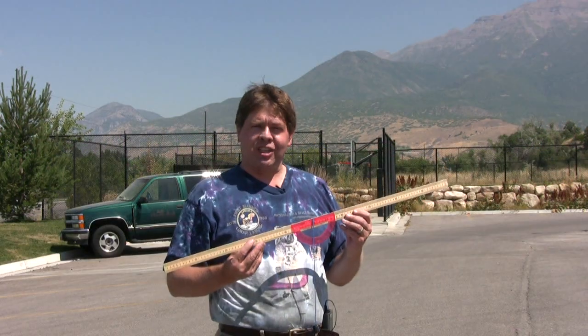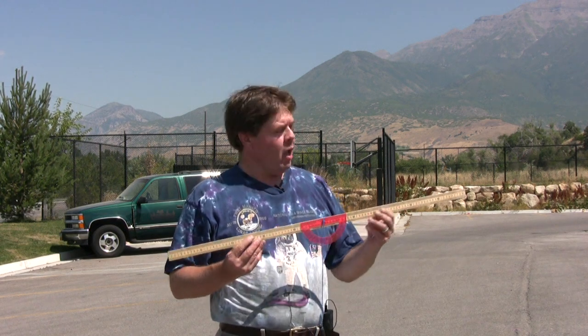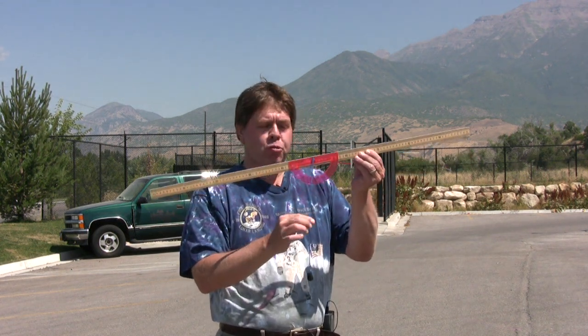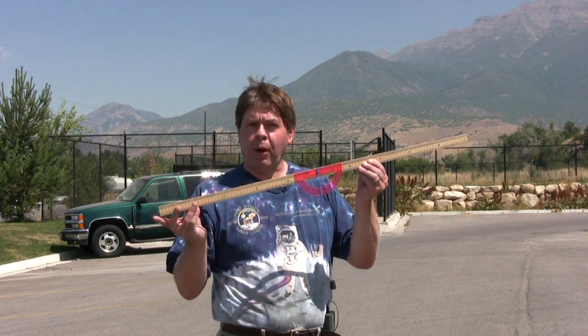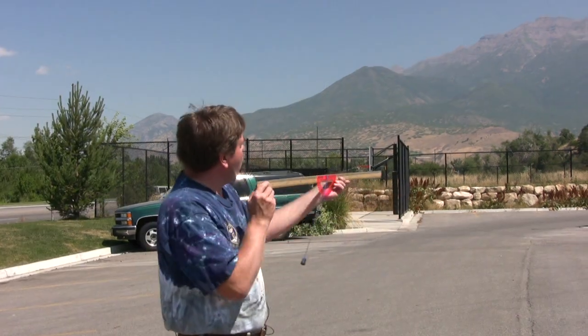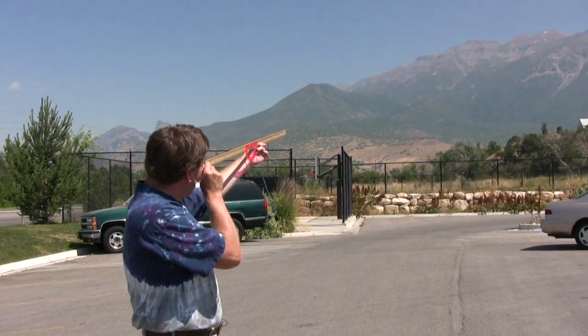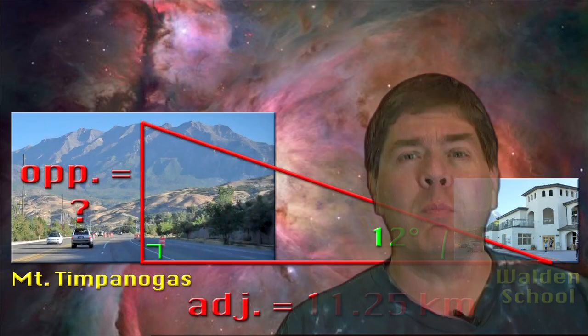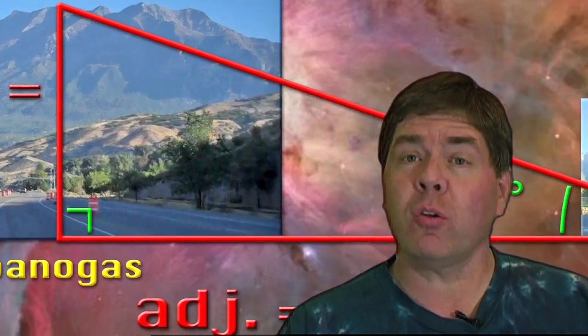Now that you've measured your local landmark's distance on the map, it's time to calculate its height. We'll use this quadrant, which is a meter stick to which we've attached a protractor at the 50 centimeter line. Hanging from the protractor is a string with a weight that acts as a plumb bob. When the meter stick is horizontal, the plumb bob will read 90 degrees. One of you will hold the ruler sighting in on the top of your landmark while a second person reads the angle on the plumb bob. We can measure the angle to the peak, which works out to be about 12 degrees.